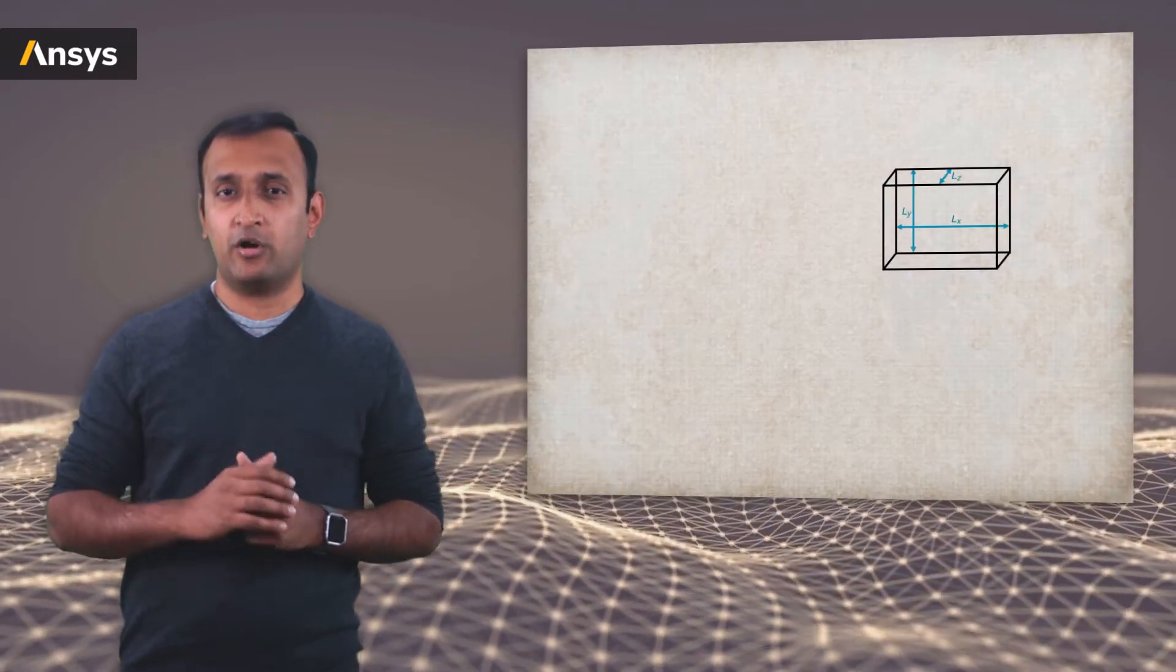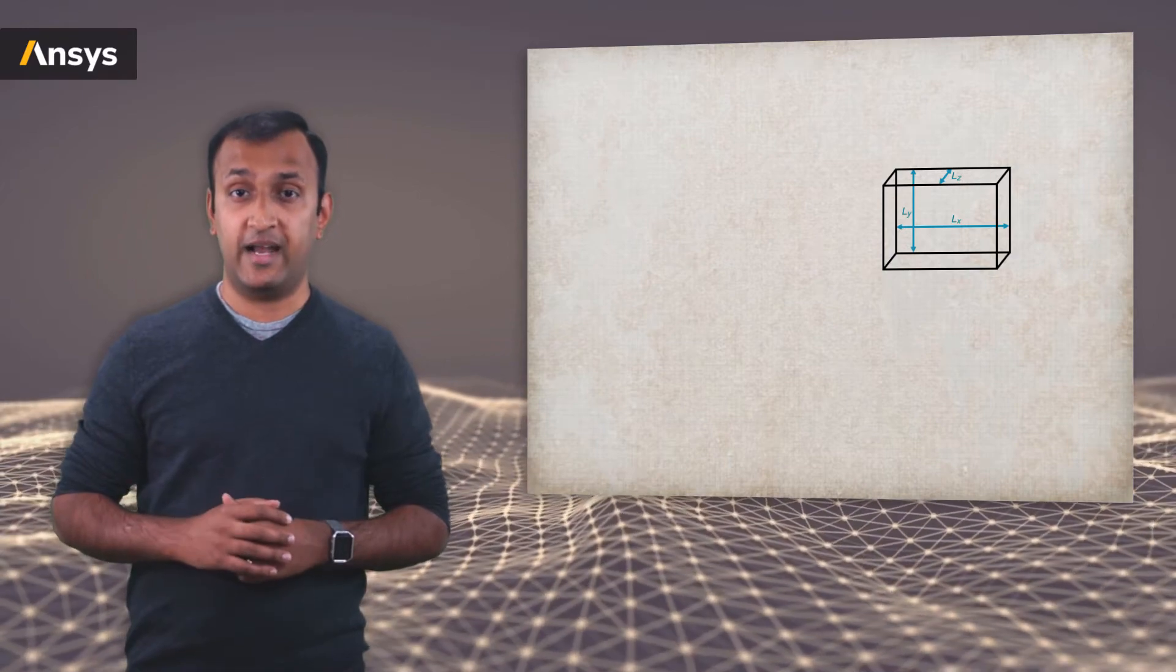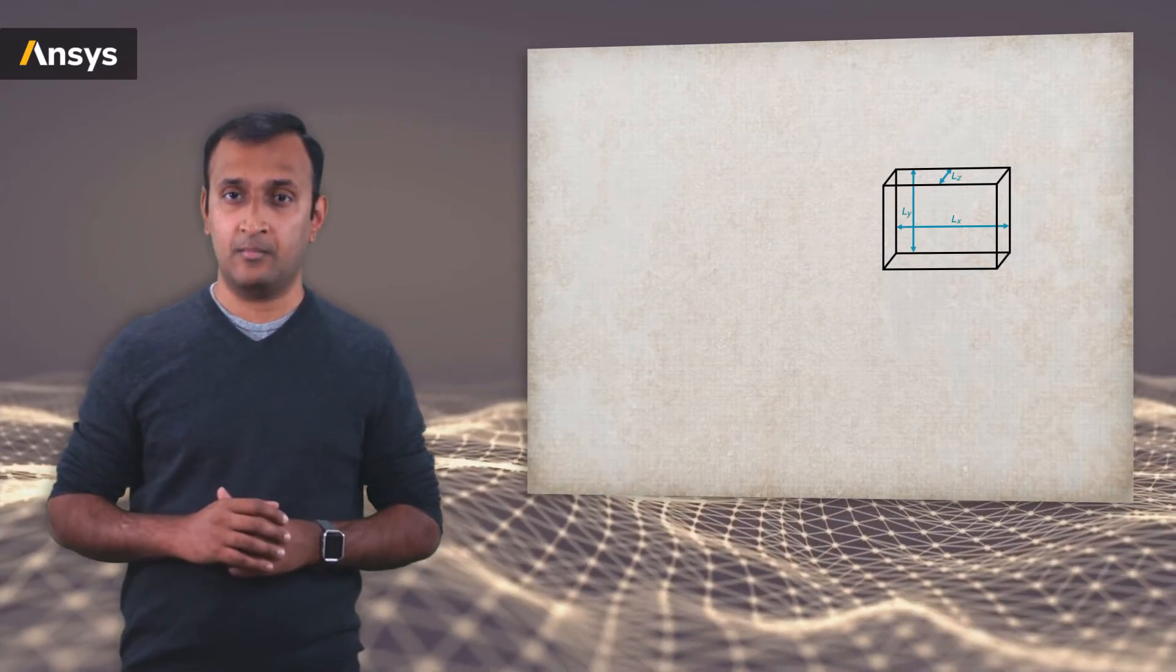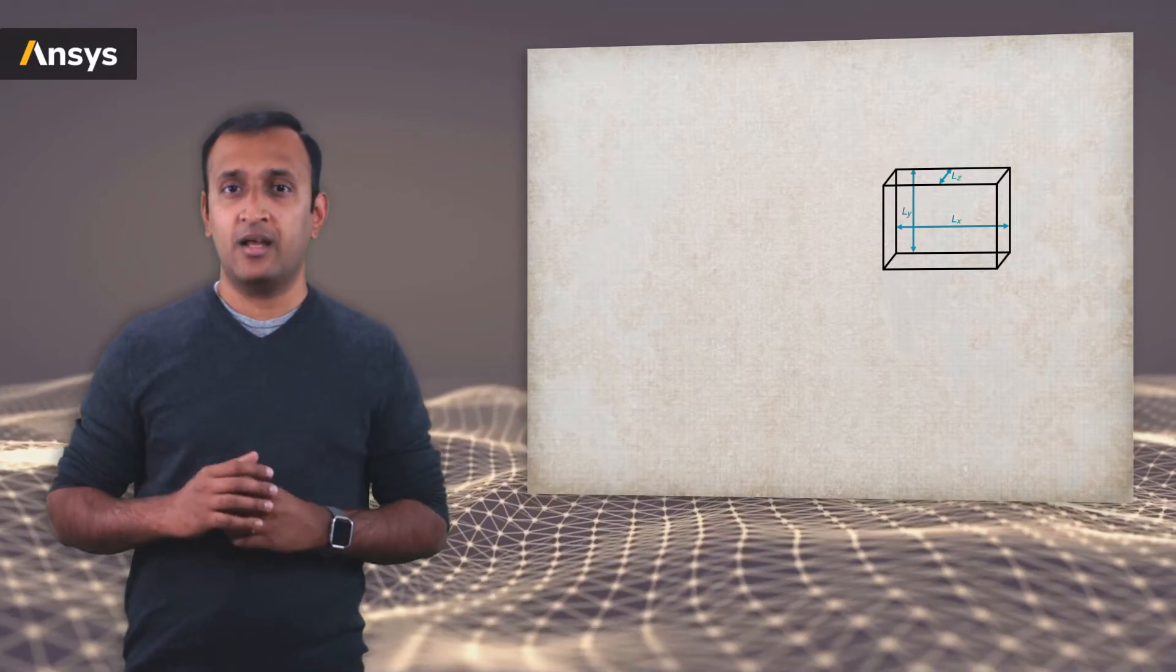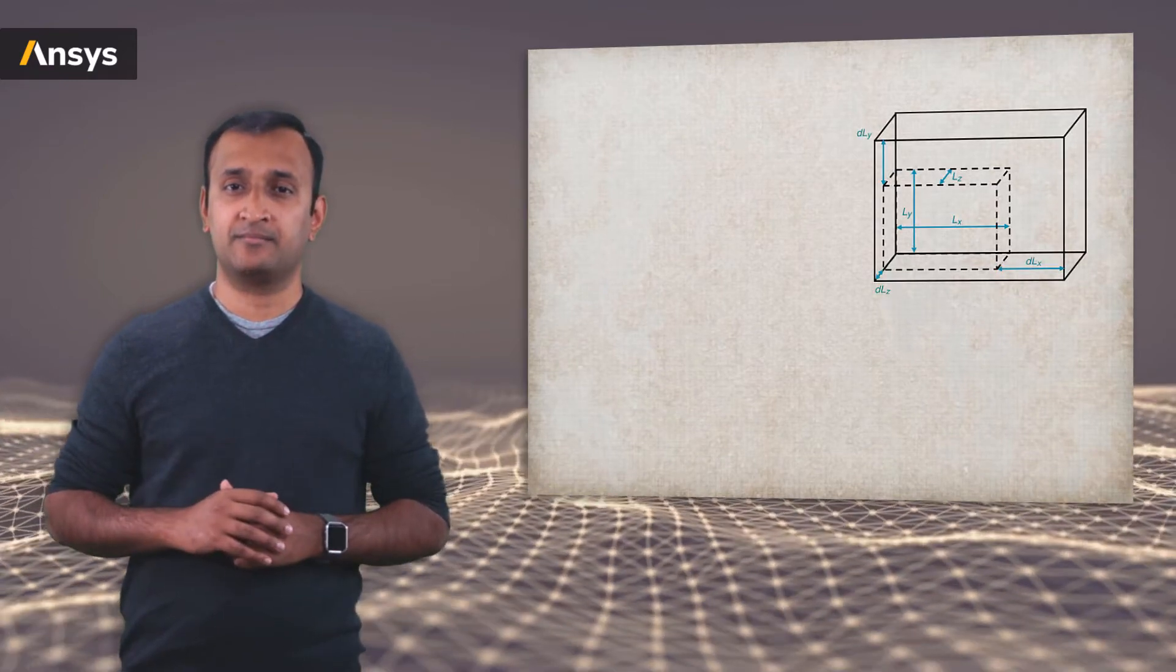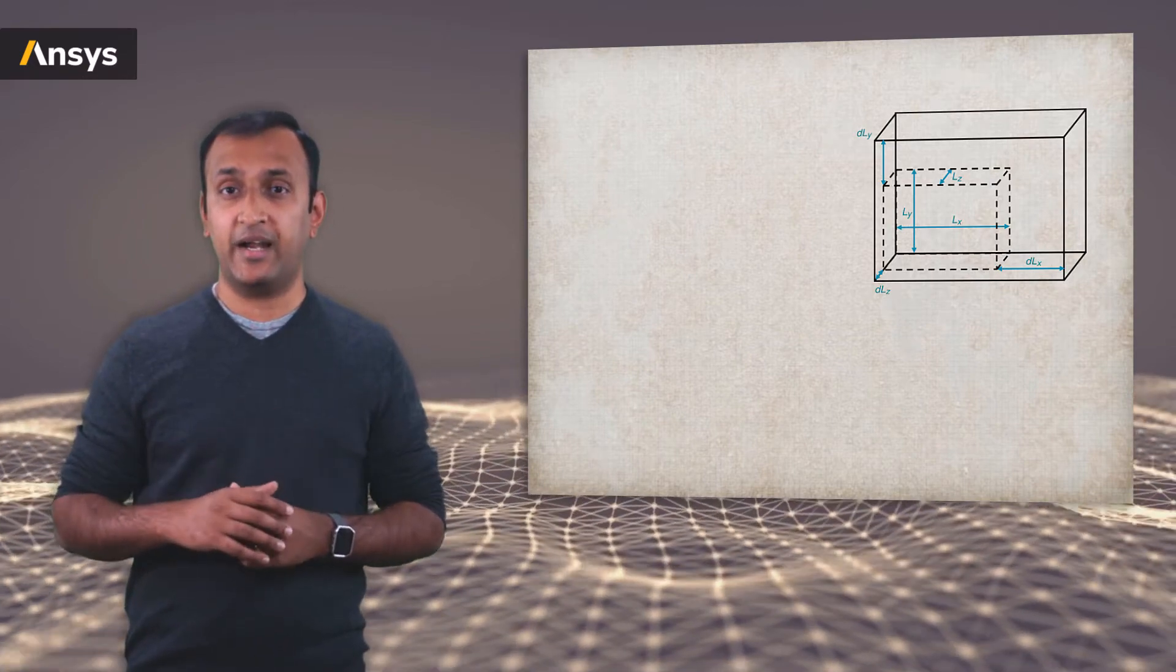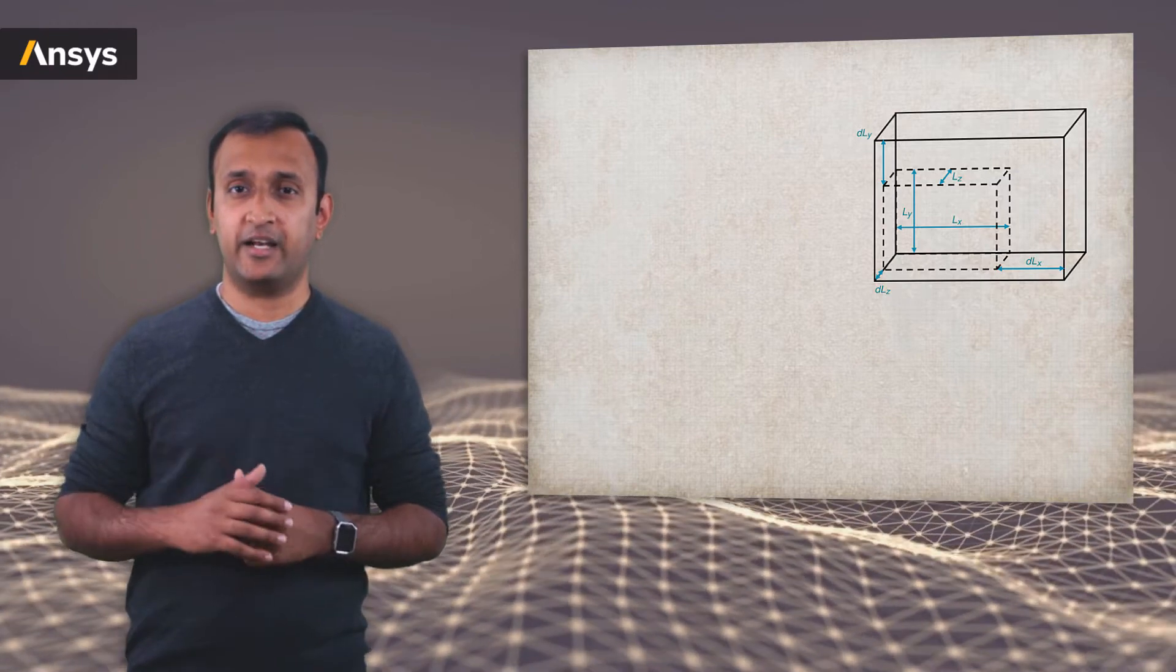Let's consider a small block of solid whose dimensions are Lx, Ly and Lz in the three principal directions. Now let's subject it to a very small deformation. Since it's oriented in the principal directions, there are no shear deformations. As a result, the solid changes its dimensions by DLx, DLy and DLz in three principal directions.